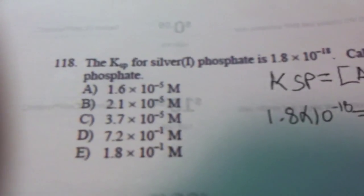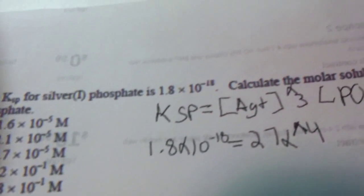Alright, so we have a solubility problem, a KSP problem. In other words, it says the KSP for silver(I) phosphate is 1.8 × 10⁻¹⁸. Calculate the molar solubility.